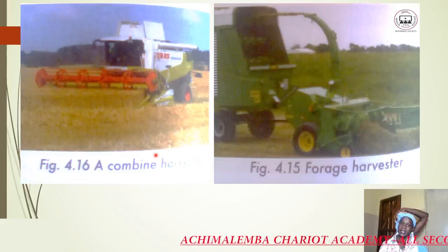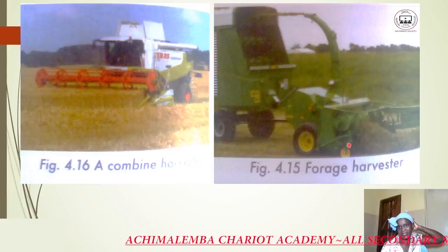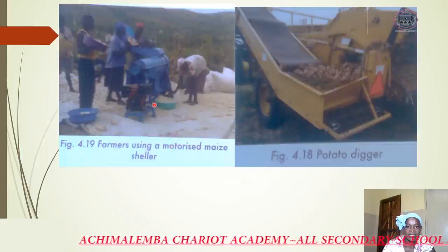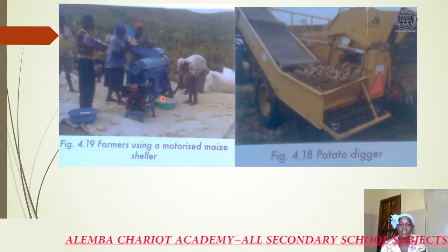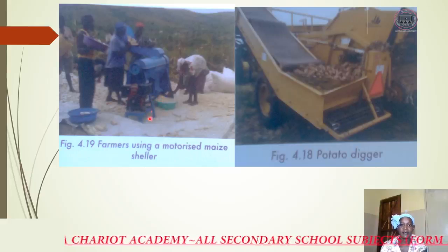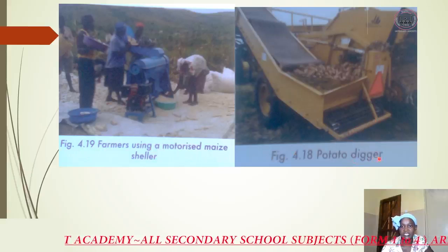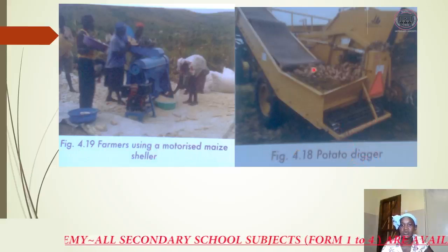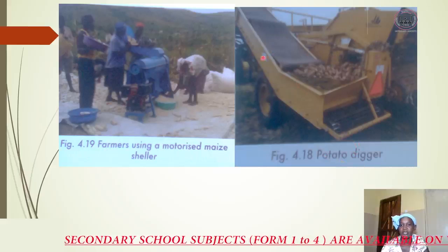This picture shows a combine harvester and this one is the forage harvester. This one is the motorized maize sheller, which is common in most districts. This one is common here in Malawi. And here is the potato digger — it digs the potatoes and also assists in selection.